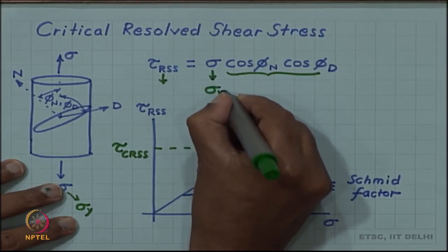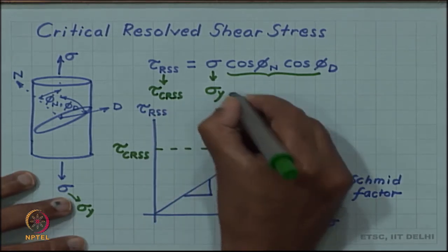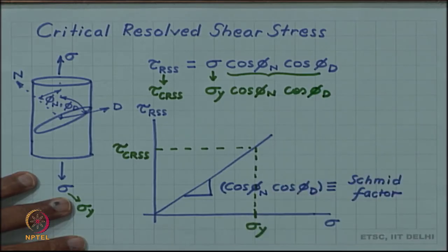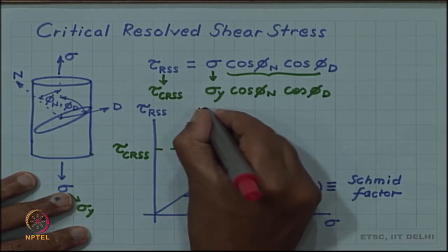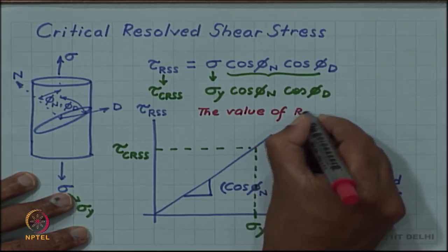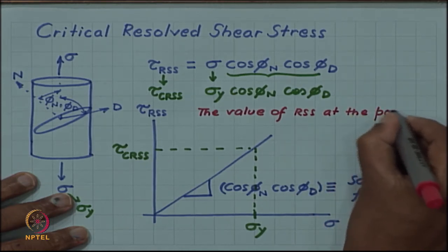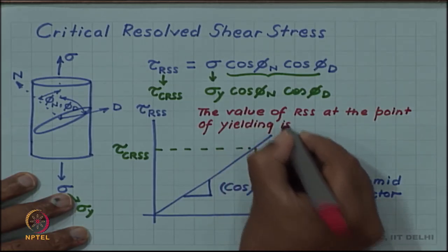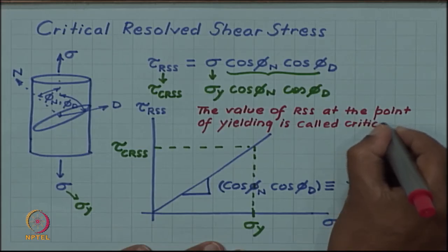As the tensile stress increases and reaches a value sigma_y, the corresponding resolved shear stress reaches a critical value: the critical resolved shear stress equals sigma_y times cos phi_n cos phi_d. The value of resolved shear stress at the point of yielding is called the critical resolved shear stress.